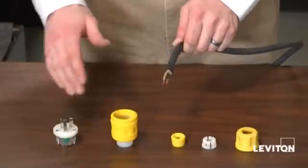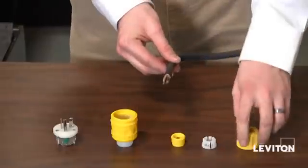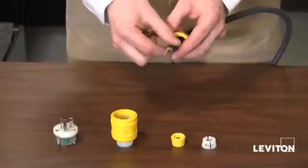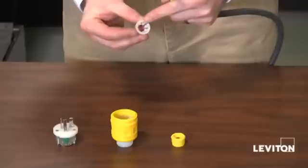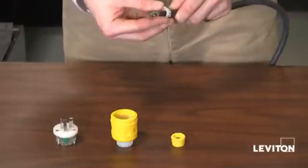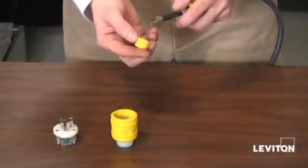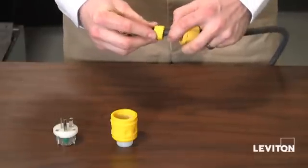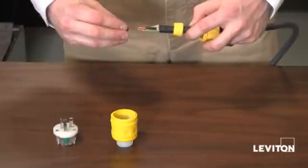In order to ensure the integrity of the plug, it's important that each individual piece goes on in the correct order. First, the nut. You want to make sure that the threads are facing towards the end of the cord. Next, the strain relief washer. Here, you want to make sure that the circular piece is facing towards the end of the cord, just like that. Now I'm going to go ahead and put on my rubber bushing. Now you will notice that the rubber bushing, one side is smaller than the other. You want the smaller side facing towards the end of the cord.